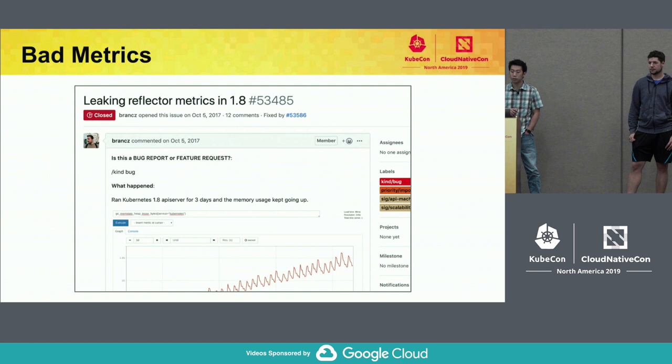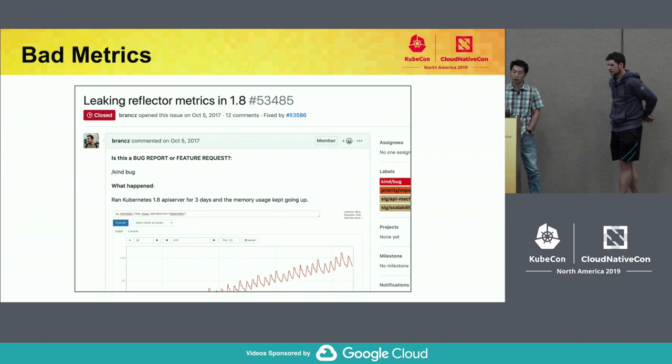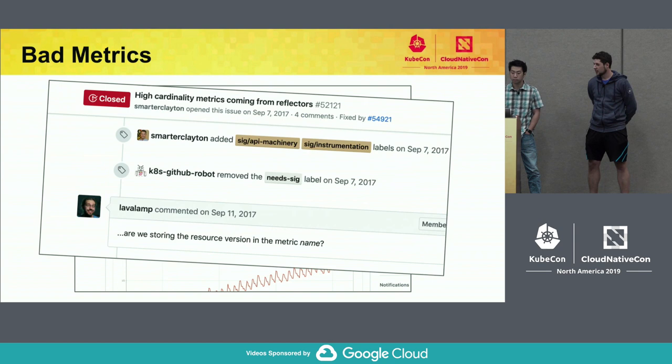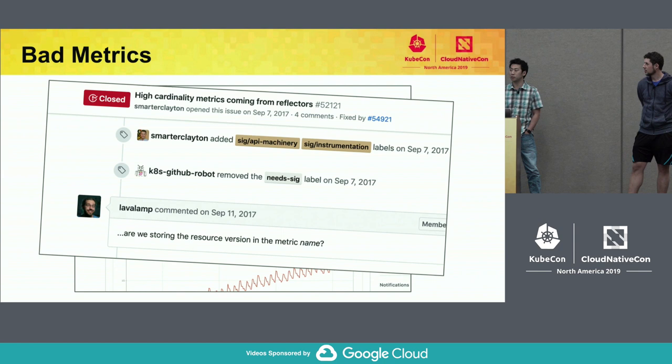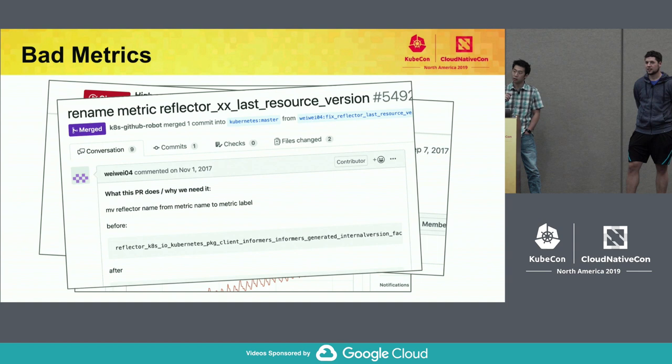This actually poses a bit of a problem historically, because the people who are writing the metrics may not be SIG instrumentation experts. So historically we've seen things like this. You can see that's Frederick Brandes, who's the co-chair — this was a while ago. That's a memory chart that looks pretty bad. This comment makes me cry a little bit on the inside: 'Are we storing the resource version in the metric label?' And that's the fix for that metric — you can see 'reflector last resource version', which is pretty gorgeous.